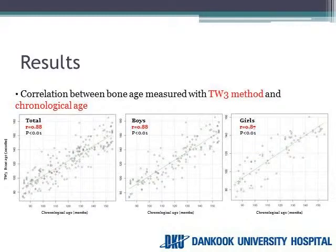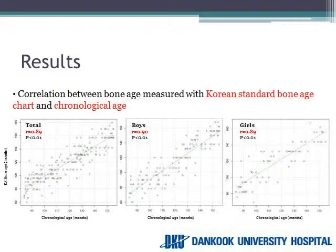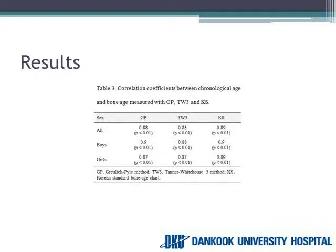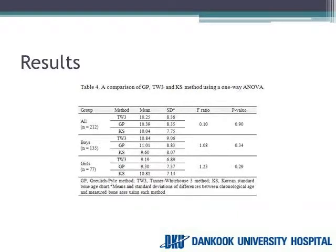Bone age estimated by TW3 and KS also showed significant correlation with chronological age. This table summarizes the data shown in the previous figures. In the whole group and the group of girls, the correlation coefficient between chronological age and bone age estimated by KS was slightly higher than the others. In the group of boys, KS and GP were slightly higher in correlation than TW3. However, according to the result of one-way ANOVA, the difference between the three methods was not significant in the whole group or by gender.